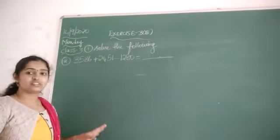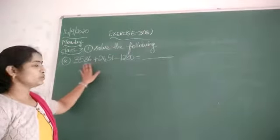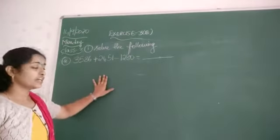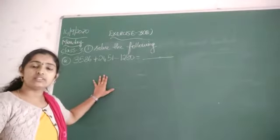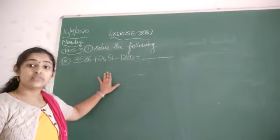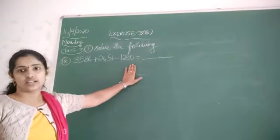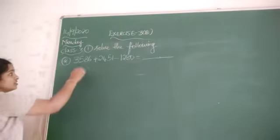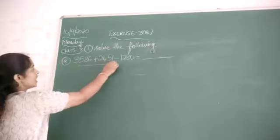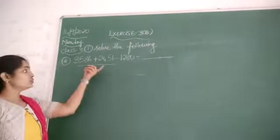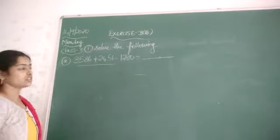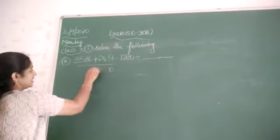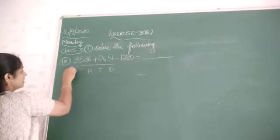So here, first thing: these two numbers we need to add. After that, from the answer we got, we need to subtract. So we start doing now. First what we need to do? We need to add these two given numbers. So we have ones, tens, hundreds and thousands.